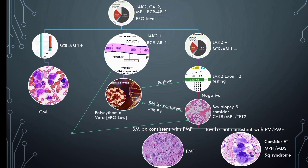For treatment of reactive thrombocytosis, it will be cured after the triggering event is resolved. If a patient presents with extreme thrombocytosis of unknown etiology and evidence of active bleeding or thrombosis, plateletpheresis is performed to rapidly reduce platelet count. For clonal thrombocytosis, treatment in polycythemia vera and essential thrombocythemia is focused on reducing the risk of thrombotic events.